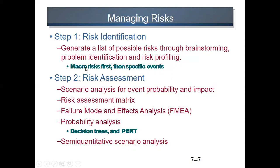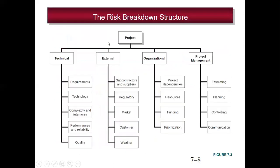For risk identification, we trace from macro risks first, then to specific events. First, the macro risk is identified, and then we drill down to specific events. This process is called the Risk Breakdown Structure, which corresponds to the Work Breakdown Structure.